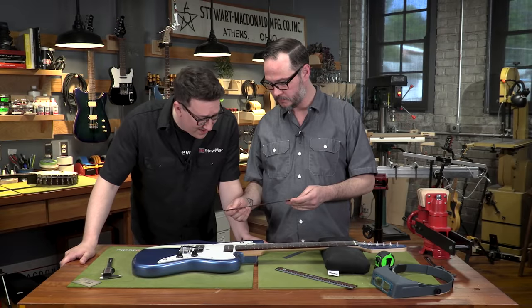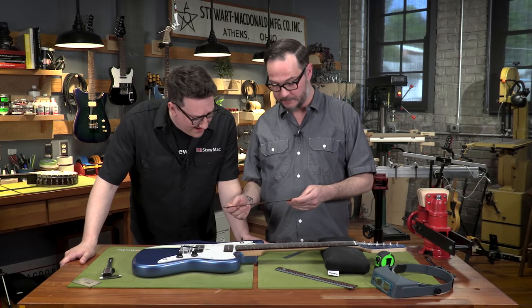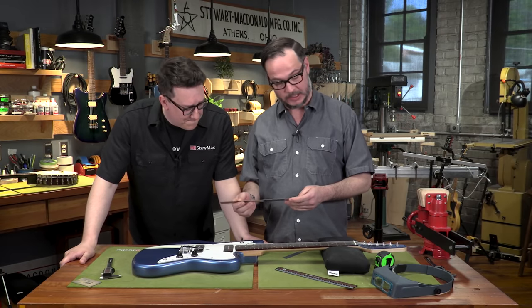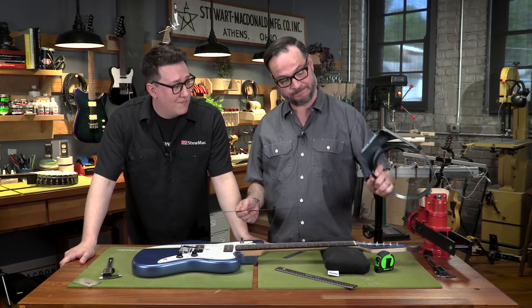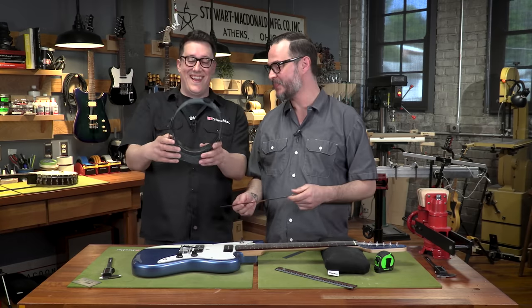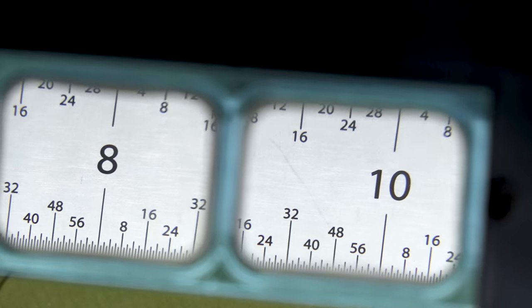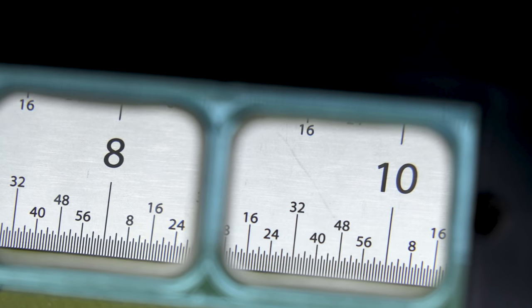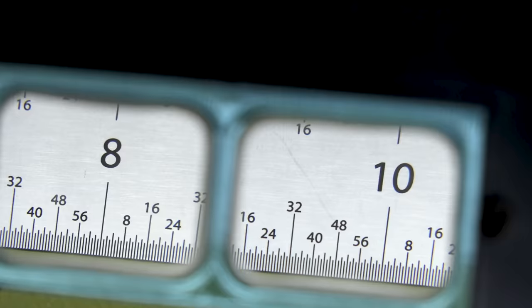Man, those 64ths are really hard to see. Yeah, totally. If you're going to be reading down to 64ths, I really recommend a magnifier, like the one Dan loves so much, the Optivisor. The older I get, the more helpful magnifiers and good light seem to be.